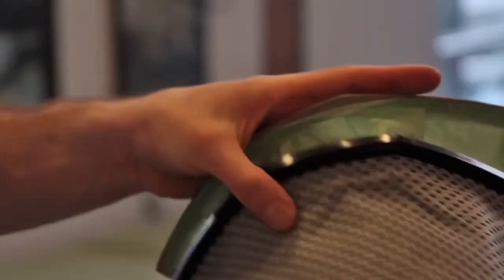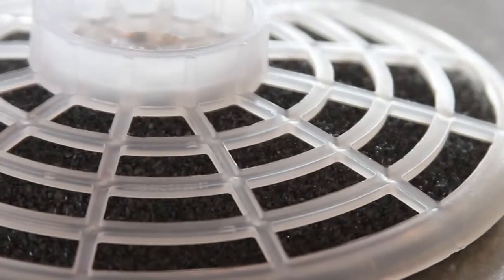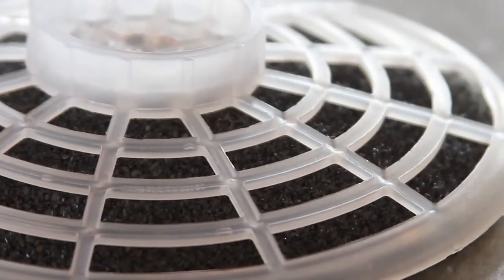Once a month or as necessary, hand or machine wash the microcloth filter and let it air dry. Do not put it in the dryer. Once a week or as necessary, clean the dome filter.